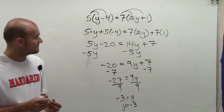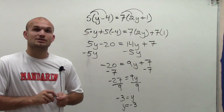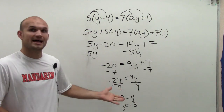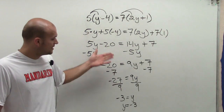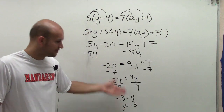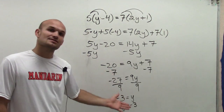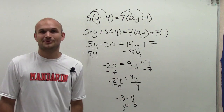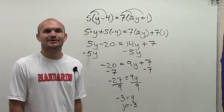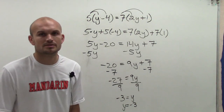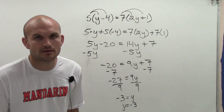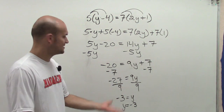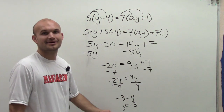So therefore, the value of my variable that makes this solution true is negative 3. There you go — y equals negative 3.